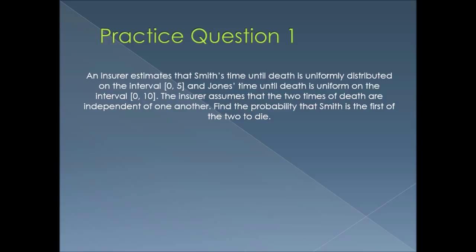To begin, an insurer estimates that Smith's time until death is uniformly distributed on the interval from 0 to 5, and Jones's time until death is uniform on the interval from 0 to 10. The insurer assumes that the two times of death are independent of one another. Find the probability that Smith is the first of the two to die.